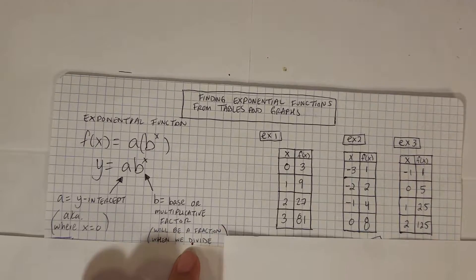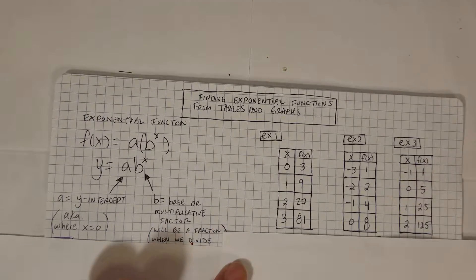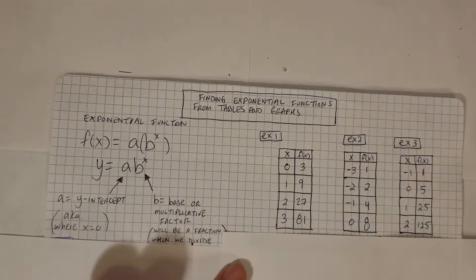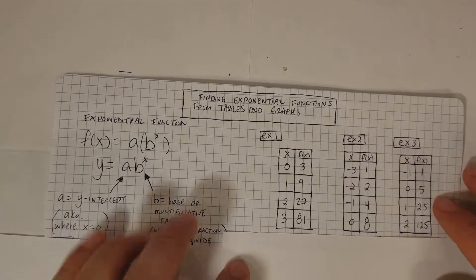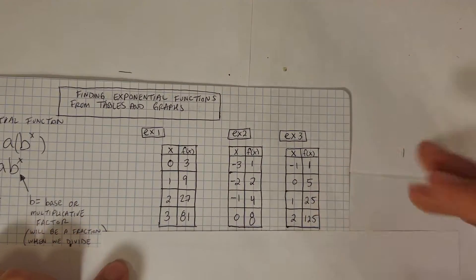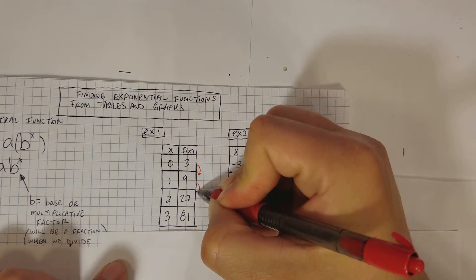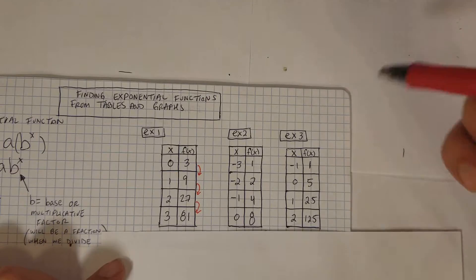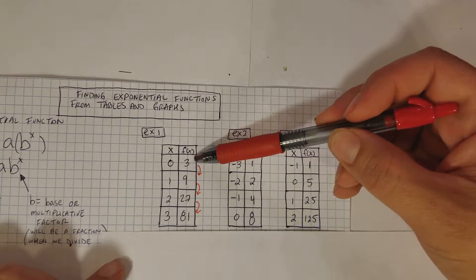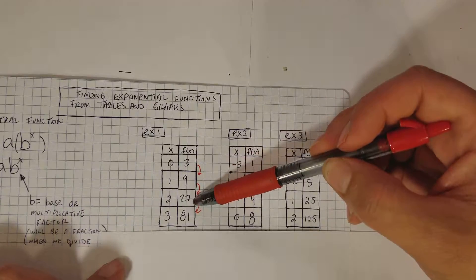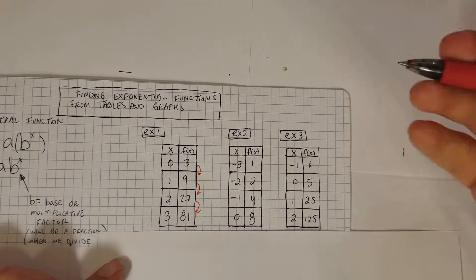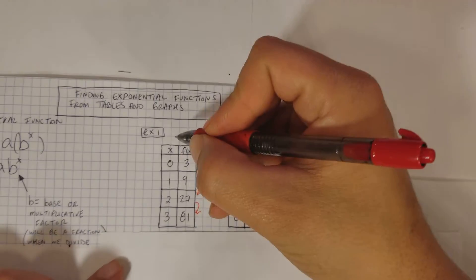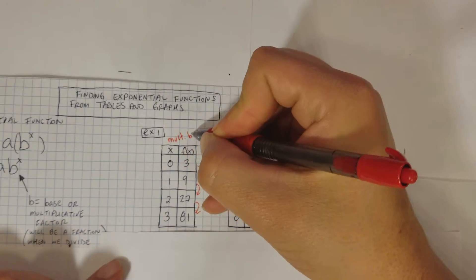Let's do a couple of examples. I have examples one, two, and three, and then we'll do a couple more that have to do with graphing. In example one, we need to figure out what's going on in the pattern. If we look at the function values: three turns into nine, nine turns into 27, 27 turns into 81. It looks like you're actually multiplying by a constant amount — three times three gives you nine, nine times three gives you 27, 27 times three gives you 81. So it's safe to say we're multiplying by three.